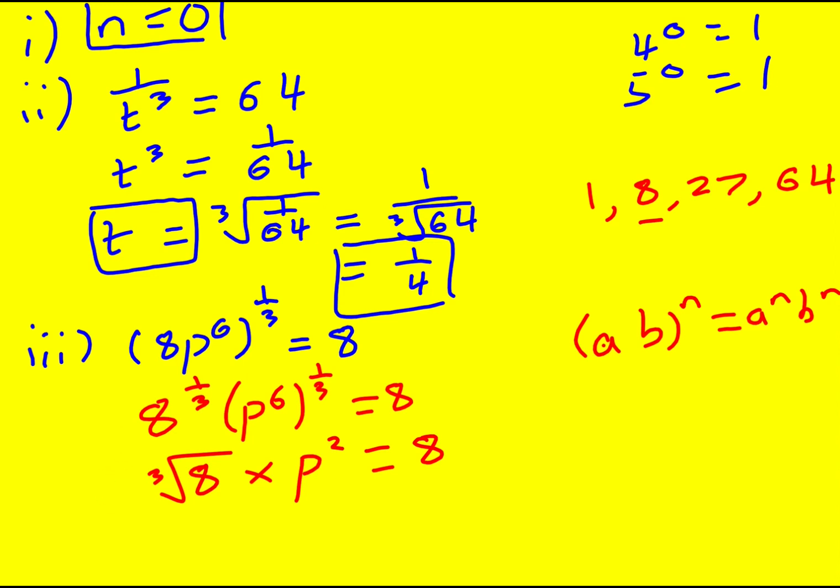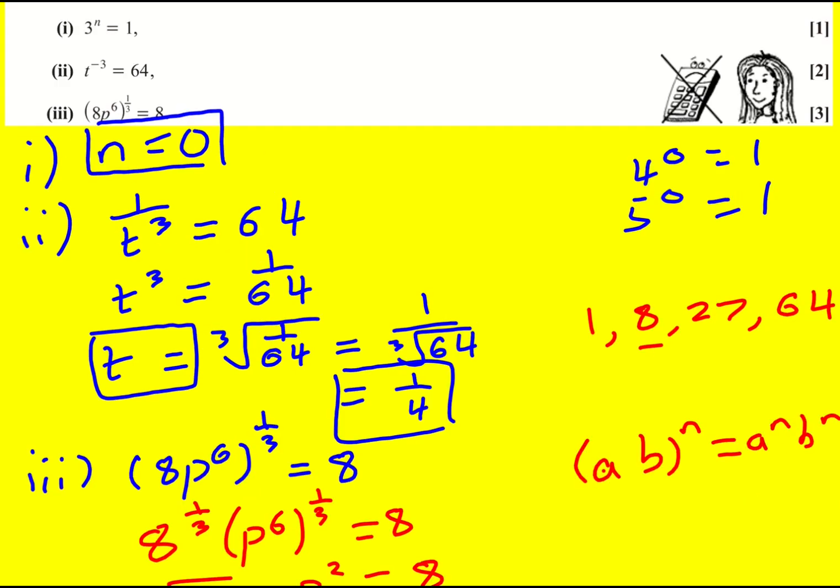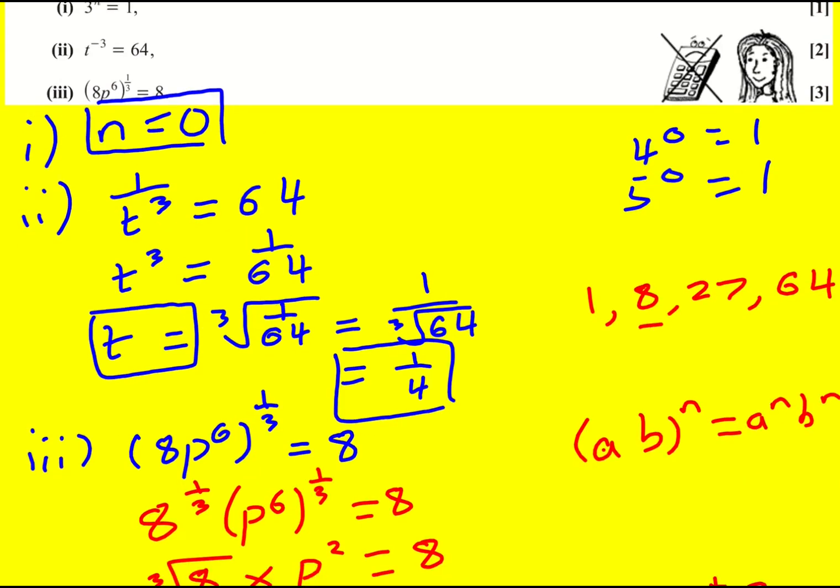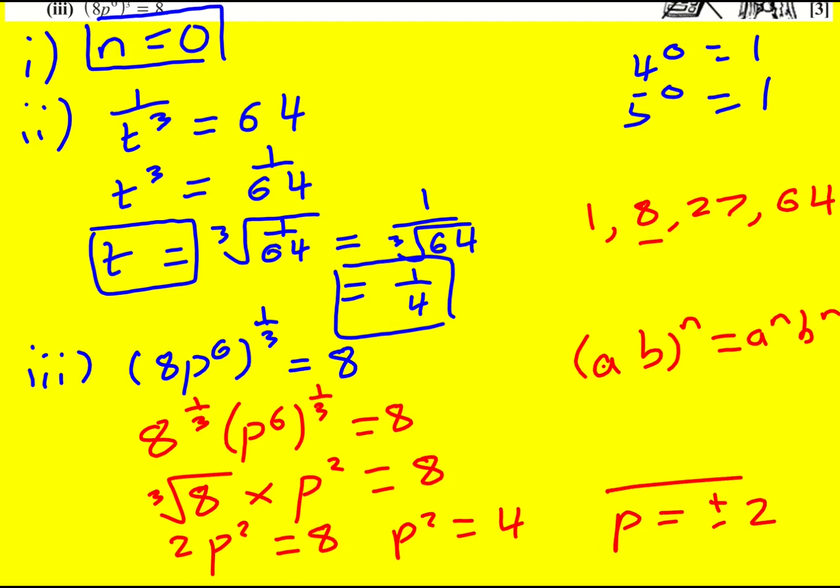Let me just get rid of that. So it's going to be 2p squared is equal to 8. Therefore p squared is equal to 4. And therefore p is the square root of 4, but it's actually plus or minus the square root of 4. I'm going to get plus or minus 2. And that is absolutely fine. There's no restriction on p.